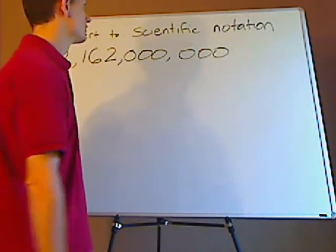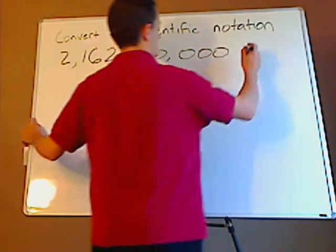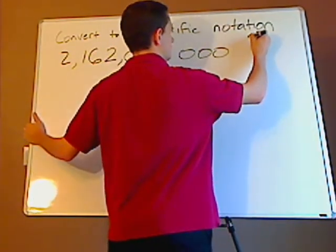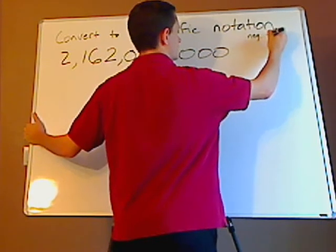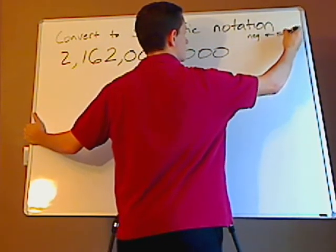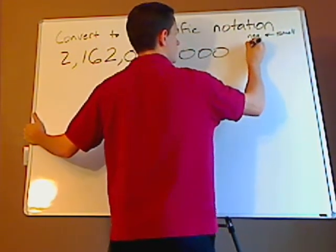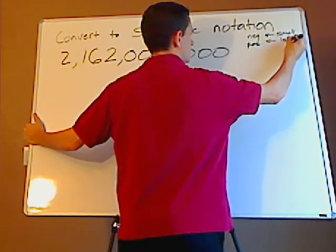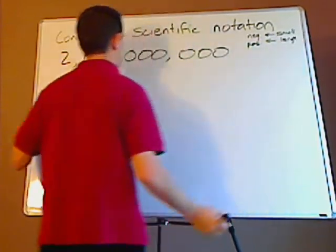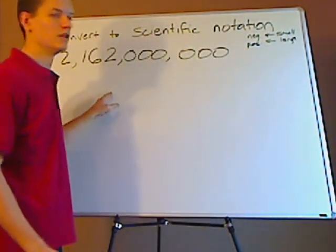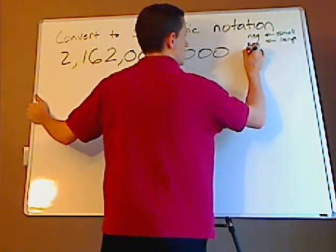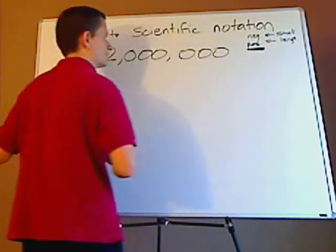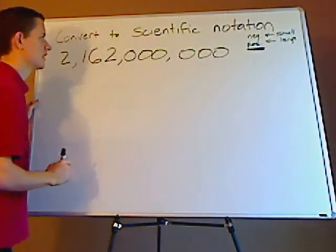A little trick that I learned to not get things off is negative means small, and positive means large. And so since this is a large number, that means the exponent has to be positive when I change it to scientific notation.